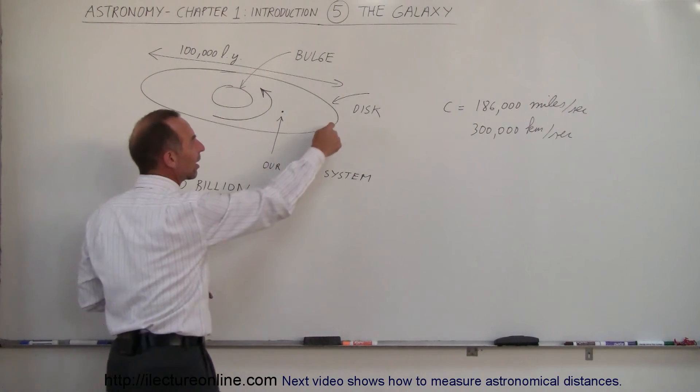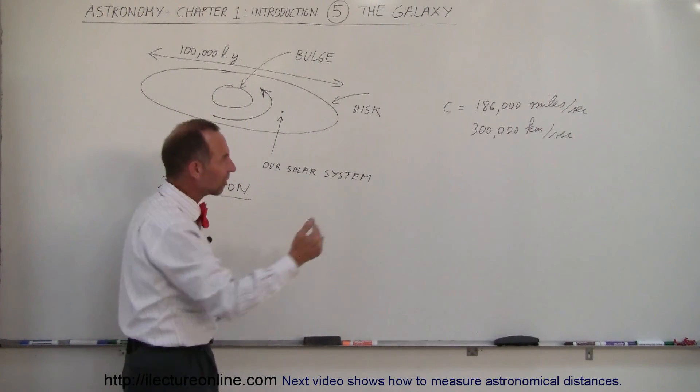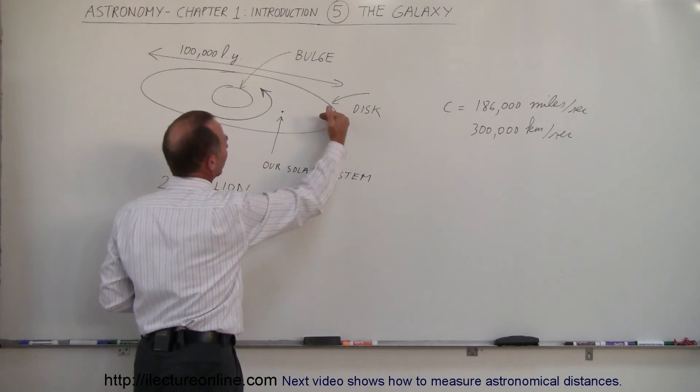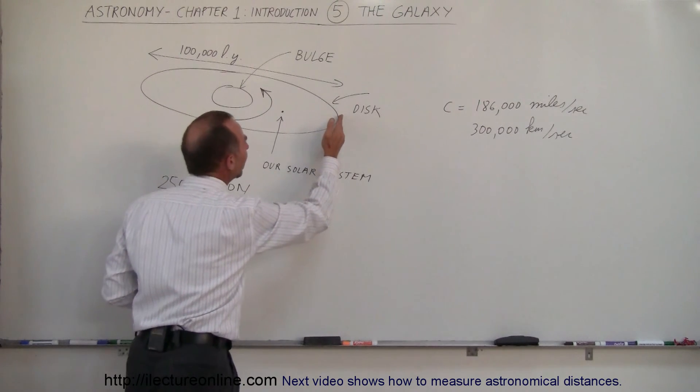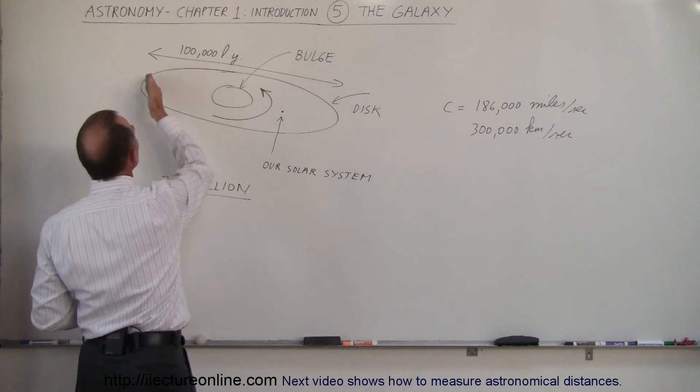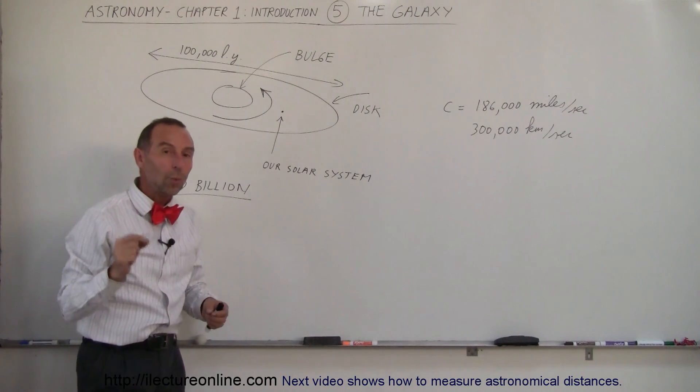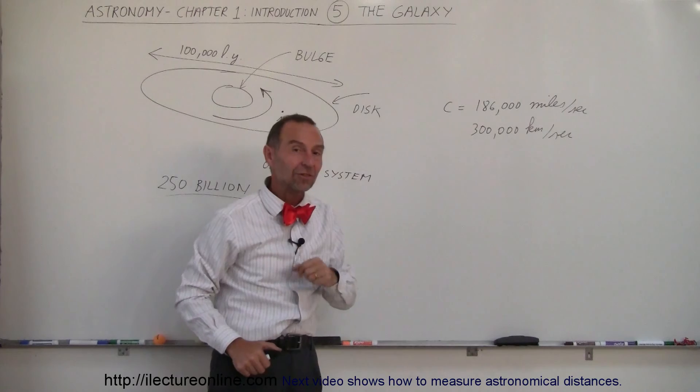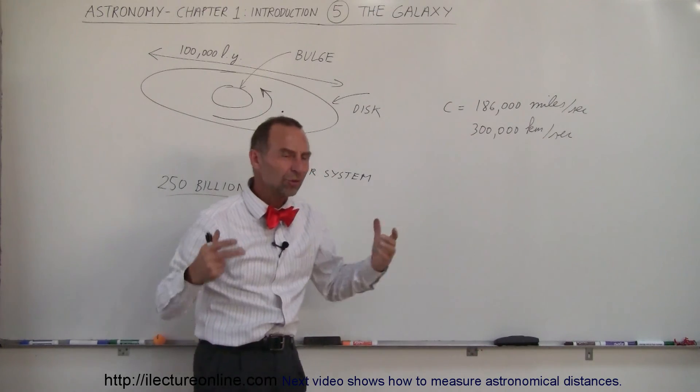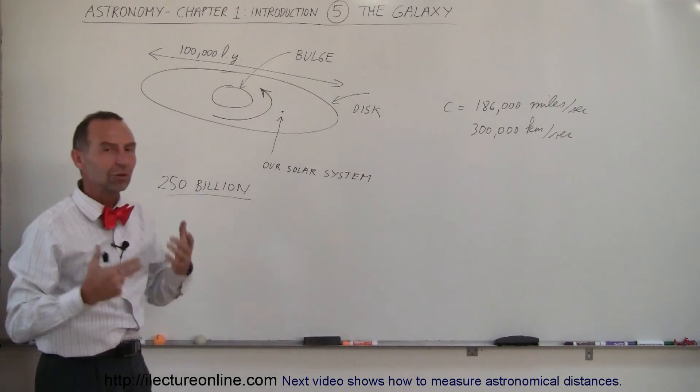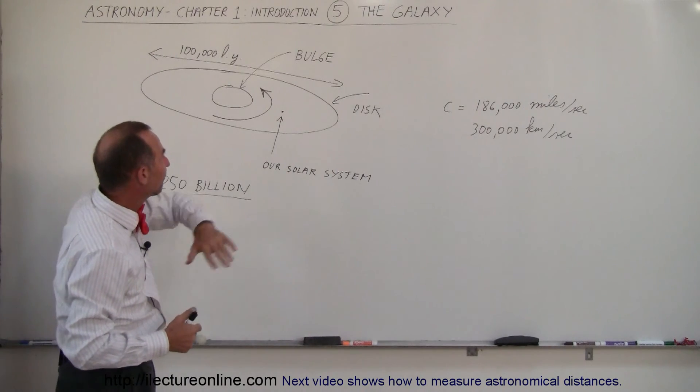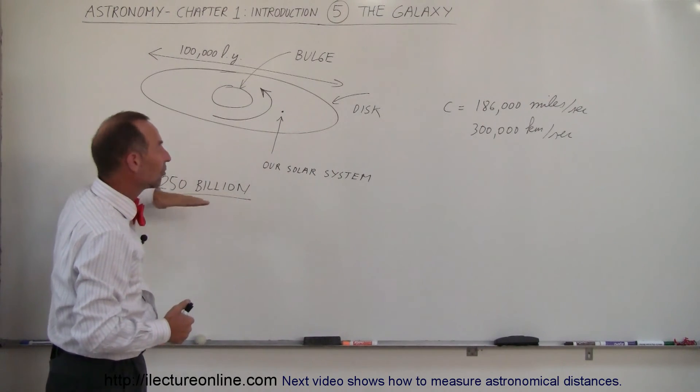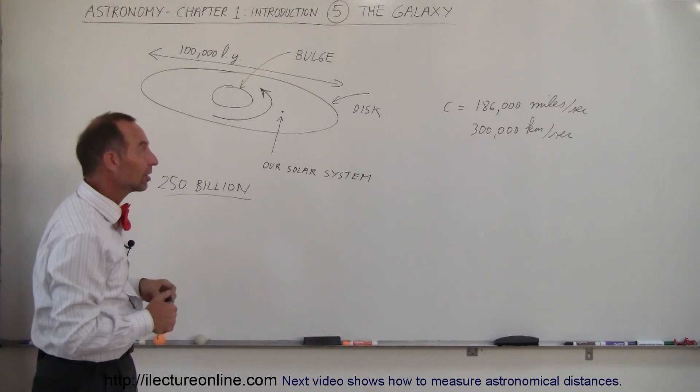Imagine if you're on one side of the galaxy, and you turn on a flashlight, and the beam of light starts traveling across the galaxy, it would take 100,000 years to reach the other side, while each second it travels 186,000 miles or 300,000 kilometers. That is an enormous distance. These galaxies are just absolutely enormous in size, and yet they're filled with hundreds of billions of stars like our galaxy here.